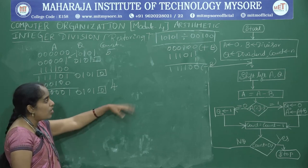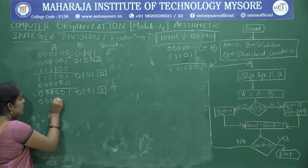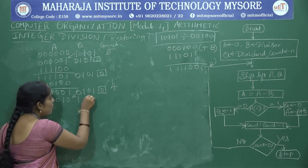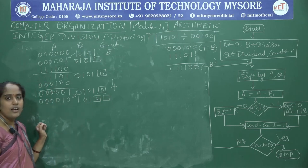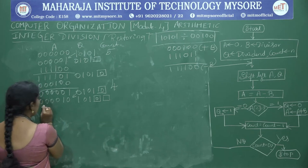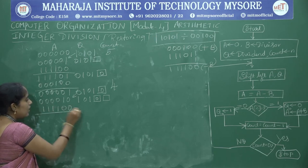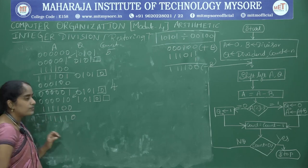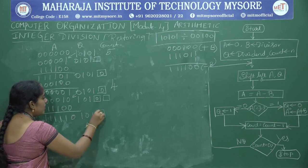Count is not 0, go back to step 3. Shift left: A becomes 000010 and Q becomes 01010 with blank. A equals A minus B: minus B is 111100; add to get 111110. Check sign bit of A — it is 1. Q shows 01010 blank.